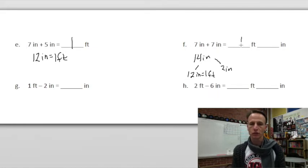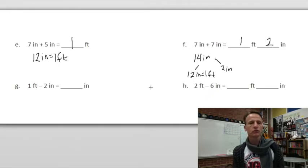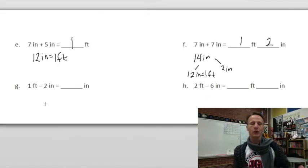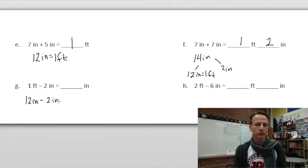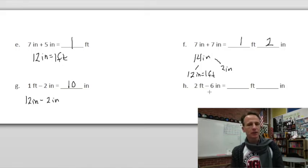Now subtraction: one foot minus two inches. We think of the one foot as 12 inches, and now we can easily subtract two inches. We get 10 inches. A similar one follows.